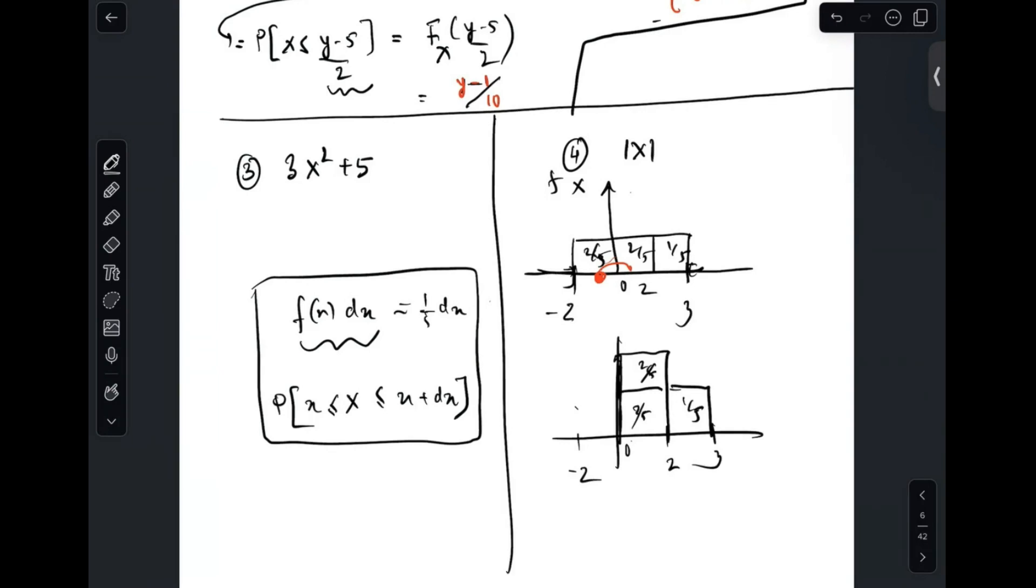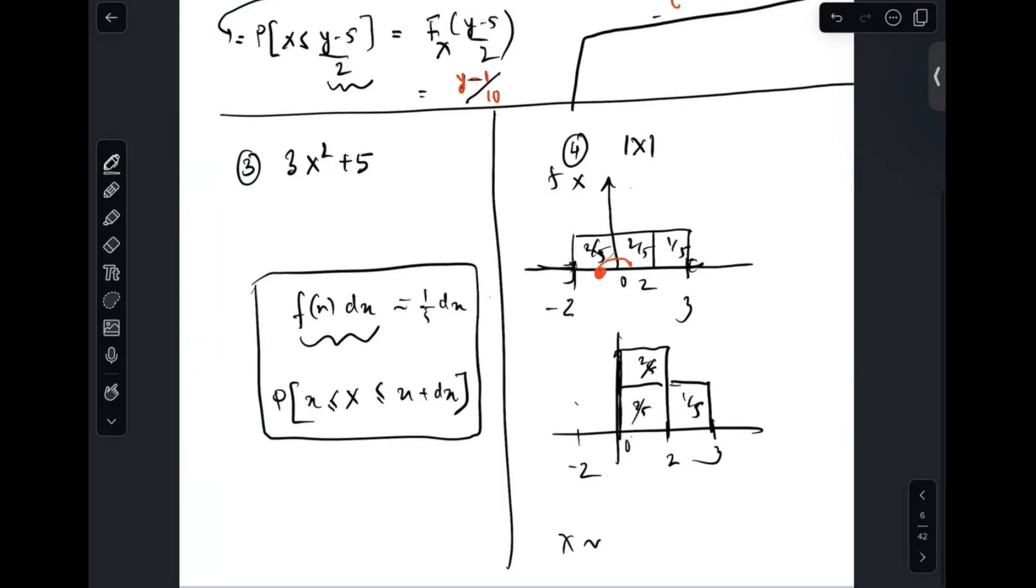But my question, what if it was minus 3 to 3? Would it become... Because then it would have been like this. Everything reflects. So that's your question to you, our food for thought question. Would it be uniform? Like if you have x follows minus 3 to 3, then will mod x follow 0 to 3 uniform? You understand? Because everything gets reflected. And probably you can prove that very easily.